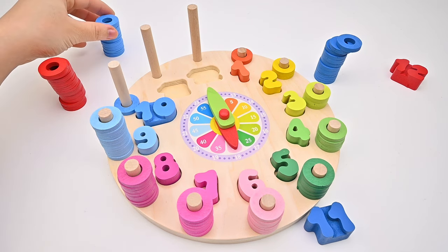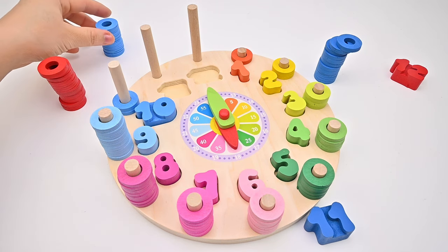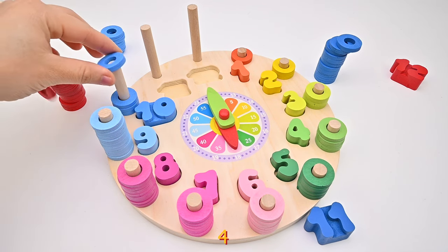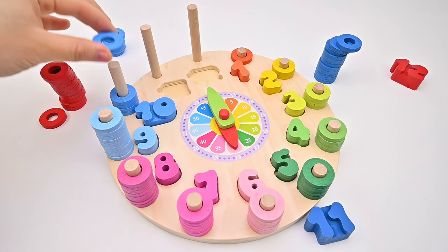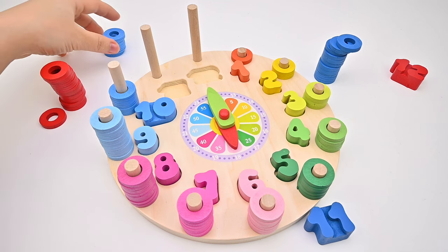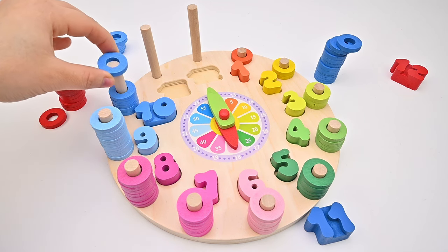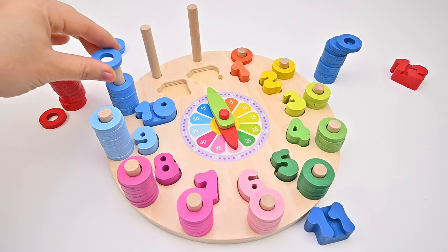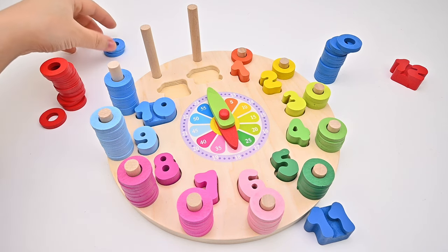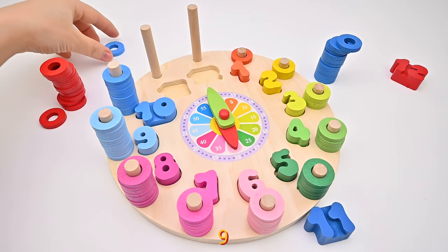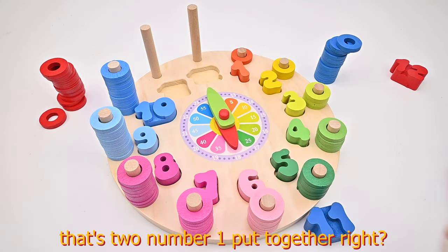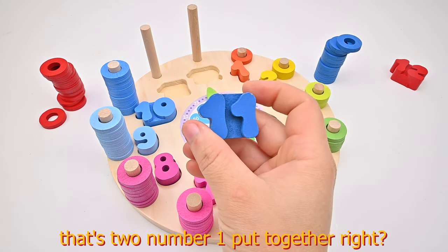How many rings are there? 1, 2, 3, 4, 5, 6, 7, 8, 9, 10. Here will be the number 11. That's two number 1s put together, right?